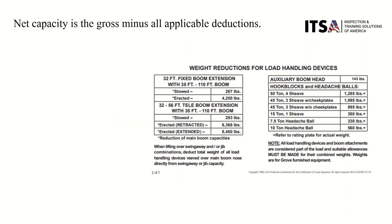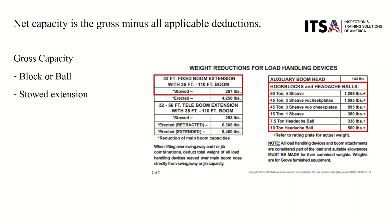Now let's talk about net. Net capacity is the gross minus all applicable deductions. They give you a chart on page 2 which lays out the weights of all the load handling devices you might be using — hook blocks and headache balls, the stowed extension, the weight of rigging (which will be noted in one of the question boxes), and anything else that's equipped needs to be deducted.